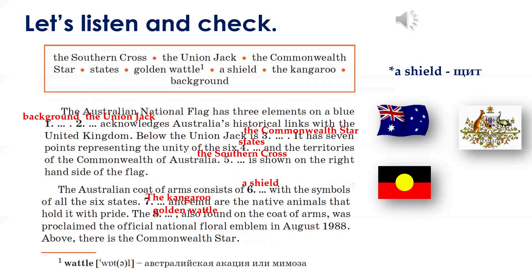Another national emblem is the coat of arms, and here we immediately recognize the unique Australian animals. Why was the emu chosen for the coat of arms and not, for example, the koala, which is a true symbol of Australia for many? The Australian coat of arms consists of a shield with the symbols of all six states. The kangaroo and emu are the native animals that hold the shield with pride. Some say the kangaroo and emu were chosen to symbolize a nation moving forward, based on the common belief that neither animal can move backwards easily.